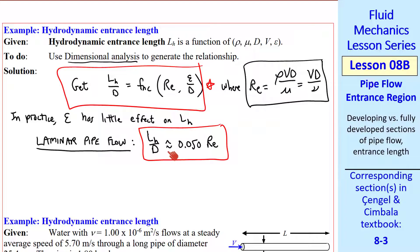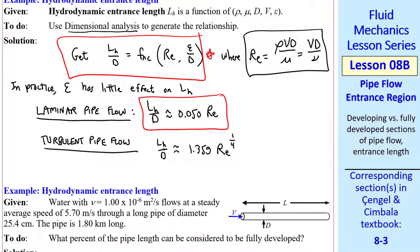For turbulent pipe flow, it turns out that L_h over d is approximately 1.359 times Reynolds number to the one-fourth power. These are rules of thumb or ballpark estimates for entrance length.